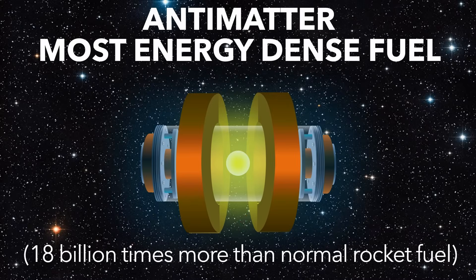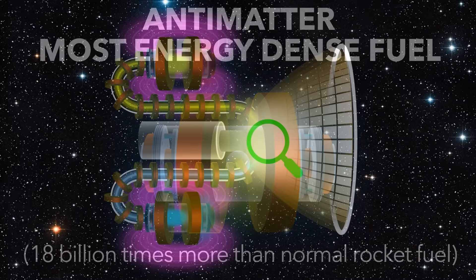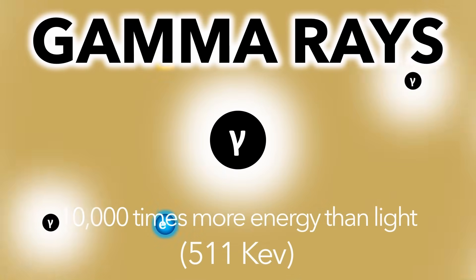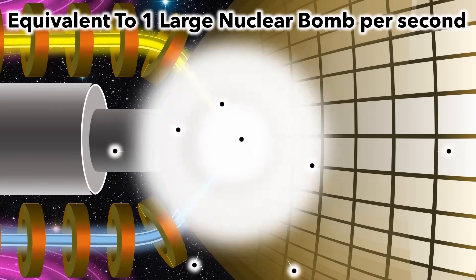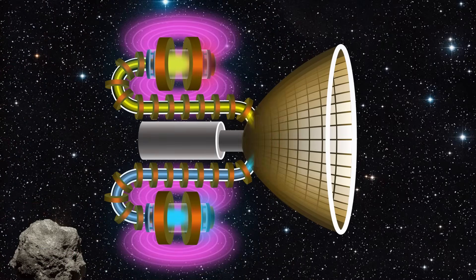The energy is released as pairs of high energy gamma rays, and with a few grams of antimatter annihilating every second, the gamma energy released is enormous. So how do we turn the gamma rays into thrust?